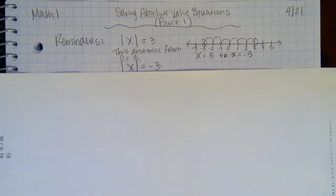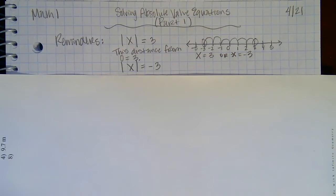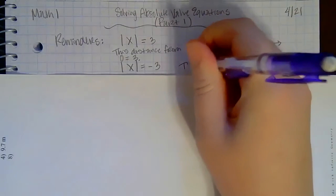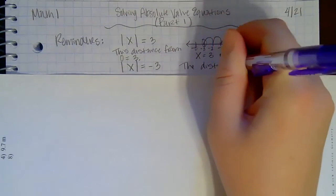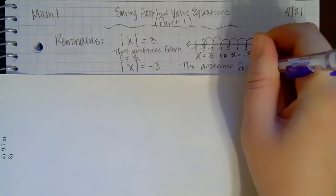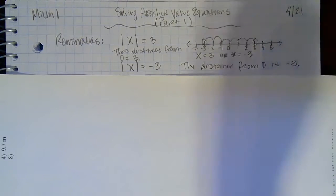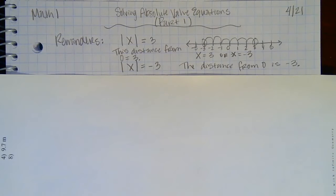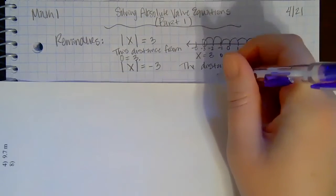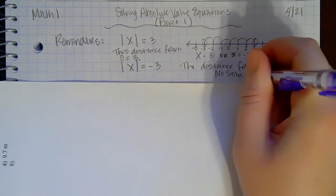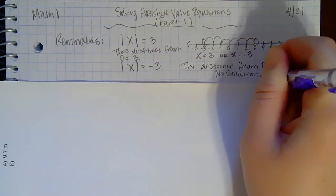And then a reminder: if it says absolute value is equal to negative 3, that means that the distance from 0 is negative 3, which we talked about. You can't have a negative distance; that doesn't make any sense. So we said that there's no solution if it's equal to a negative, because the distance can't be negative.